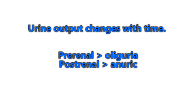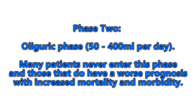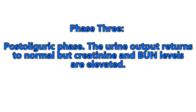Urine output changes with time. In pre-renal you get oliguria; post-renal, anuria. Acute tubular injury has three phases. The prodromal phase has normal urine output of 1 to 2.5 liters per day. The oliguric phase has output of 50 to 400 mLs per day — a dramatic drop. Many patients never enter this phase, but those that do have a worse prognosis with increased mortality and morbidity. The post-oliguric phase is the third phase, where urine output returns to normal but creatinine and BUN remain elevated.